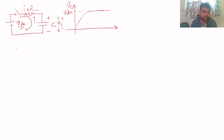Now applying KVL in this loop, starting from the source: here it is negative then positive, so net potential increases giving us VDC. Then reaching the resistor, voltage is positive then becomes negative, so net voltage goes down — that's why it becomes negative VR.